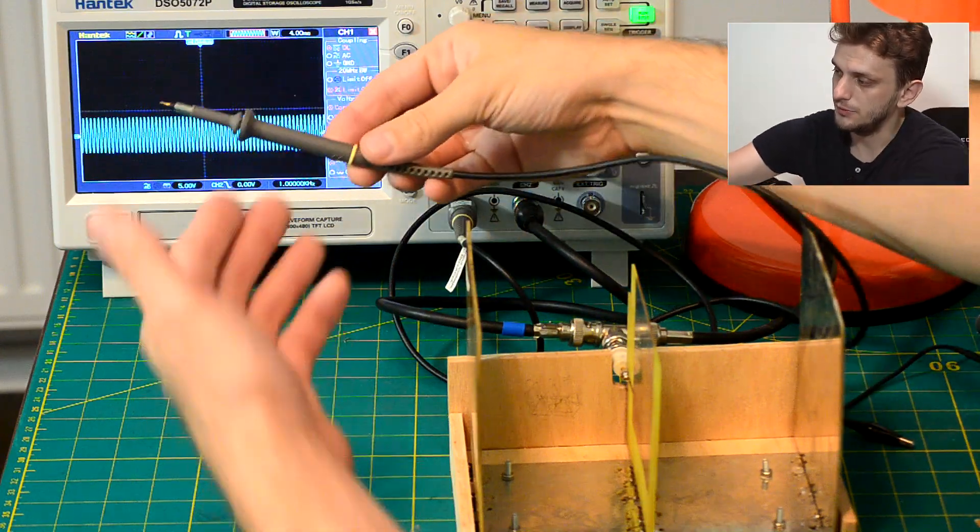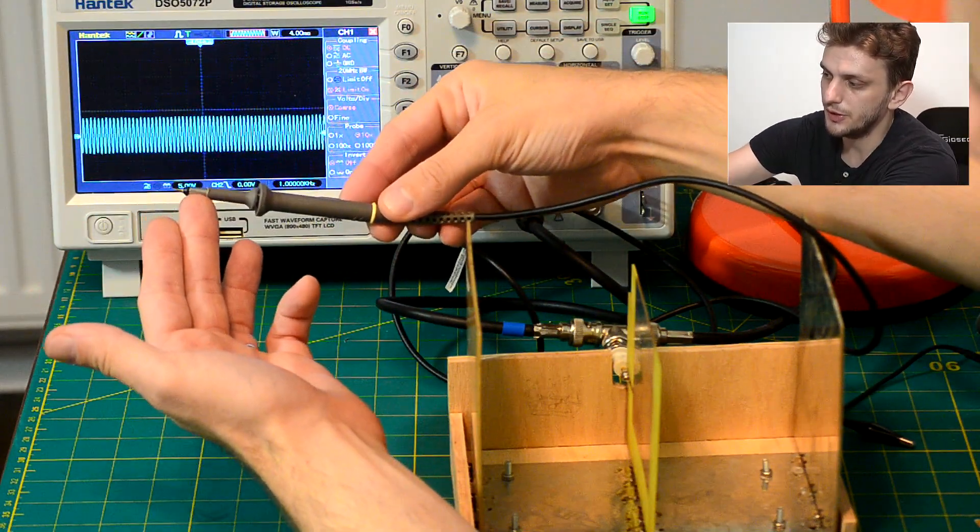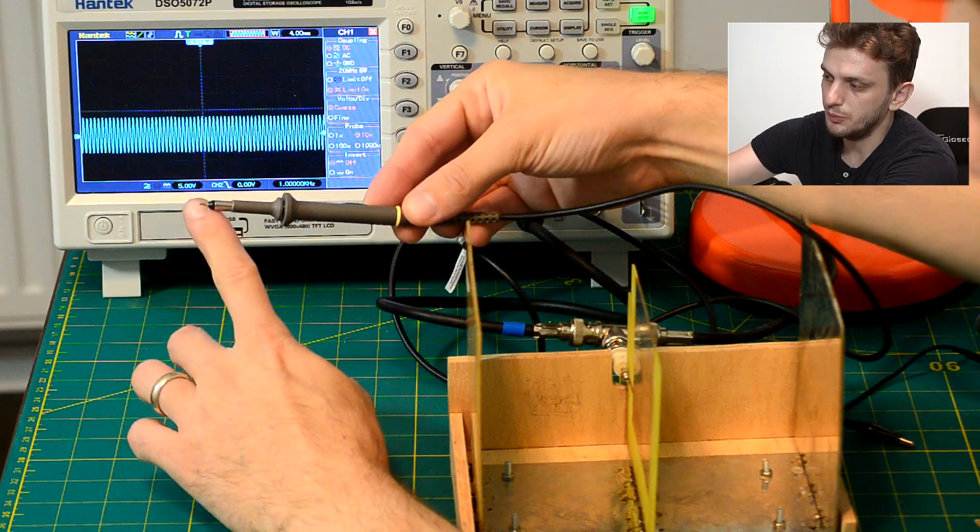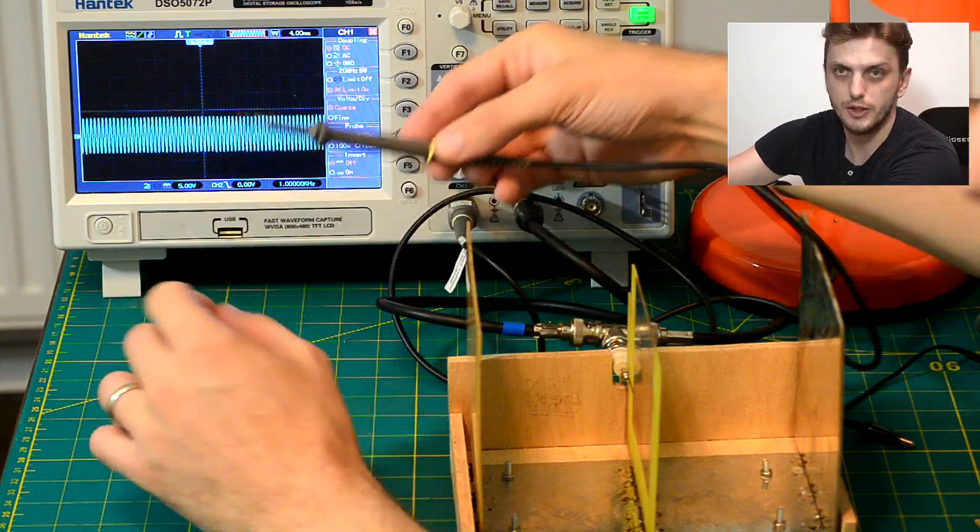So one implementation of that would be your regular oscilloscope probe. I mean this thing has shielding up until the very tip where you have a few millimeters of exposed live wire.